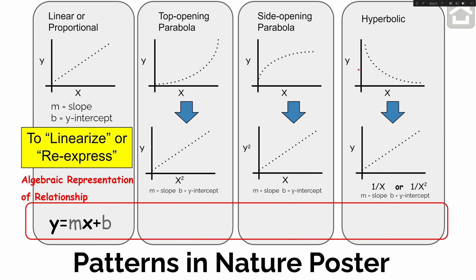For the hyperbolic relationship, where as x increases, y decreases, there are two different ways to re-express or linearize that kind of graph. You kind of have to just try one, and if that doesn't work, try the other. You either take whatever is graphed on your horizontal axis and take the inverse of those values, then graph y versus 1 over x, or you graph y versus 1 over x squared. Doing that should give you a linear relationship, showing you what type of hyperbolic relationship it was.